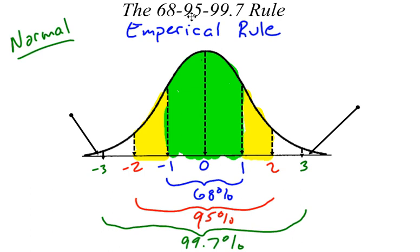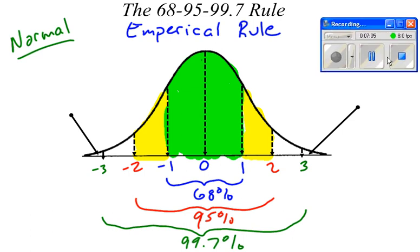It's not exactly 68 and 95 and 99.7, but it's close enough for us to use this rule to make predictions and find some probabilities. So we're going to use this empirical rule, or the 68, 95, 99.7 rule, to help us in statistics.